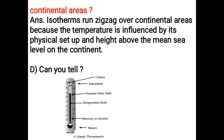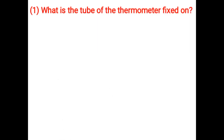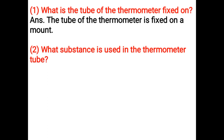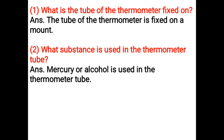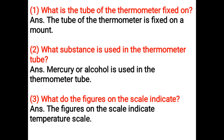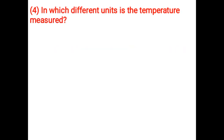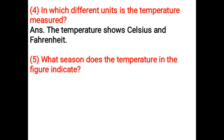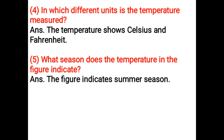Observe a simple thermometer and answer the following questions. The tube of the thermometer is fixed on a mount. Mercury or alcohol is used in the thermometer tube. The figures on the scale indicate temperature. The temperature is measured in different units — Celsius and Fahrenheit. The figure on the thermometer indicates summer season.